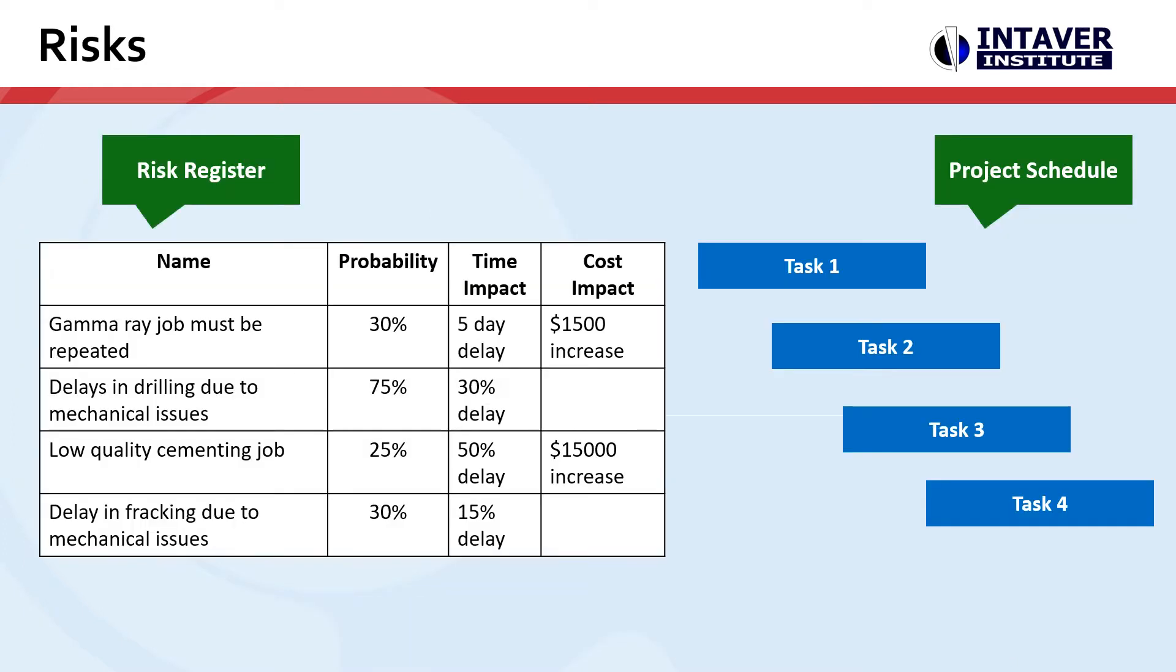Next, we need a list of risks. The risks should have a name, probability, and impacts, and we're going to assign these risks to activities in the schedule.